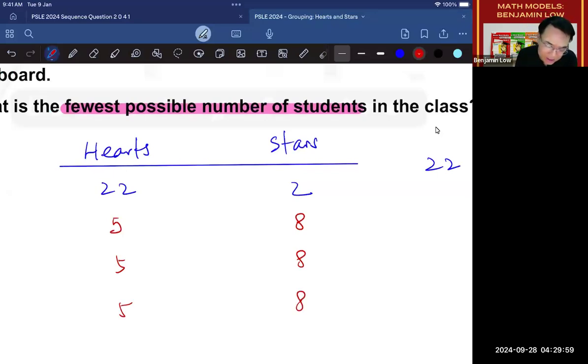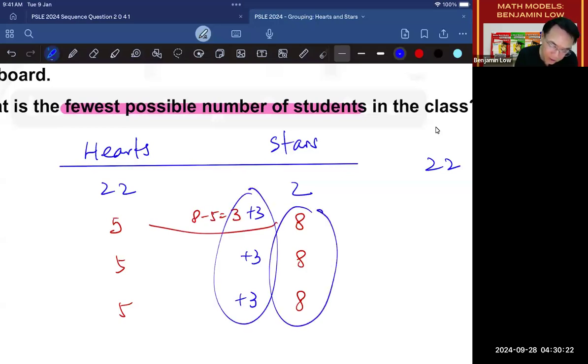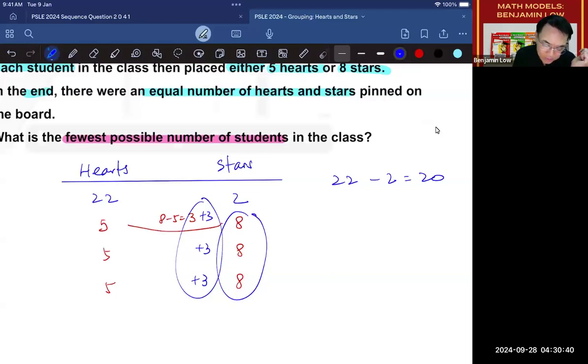If you were to do that, basically, what you are saying is that every time this happens, you are going to put 8 minus 5, or simply an extra 3 stars. And there will be an additional 3 stars here, and another 3 stars here, another 3 stars here. And eventually, because the person putting the stars is always more than the hearts, the stars is behind by 20 will eventually catch up with the hearts.